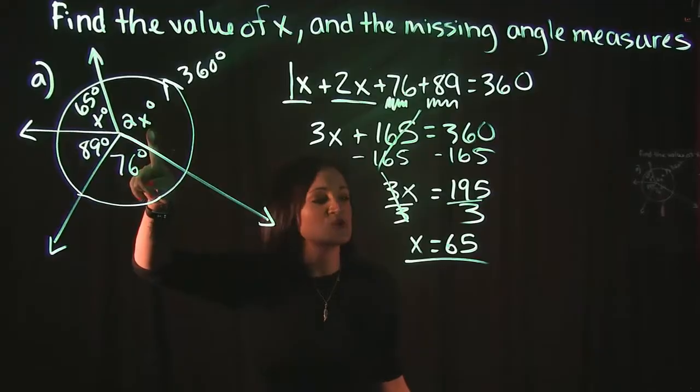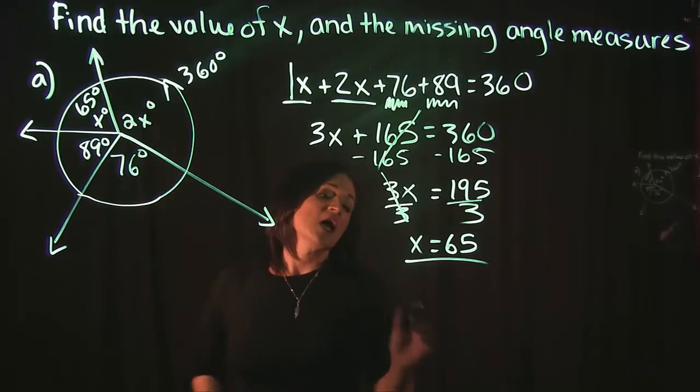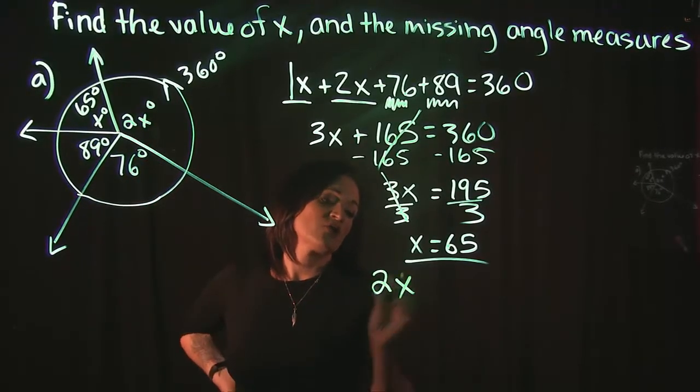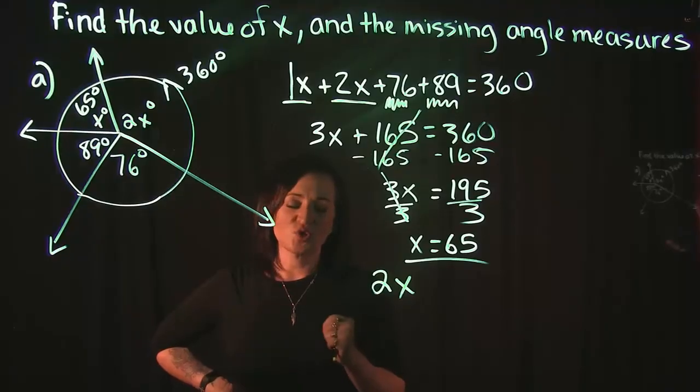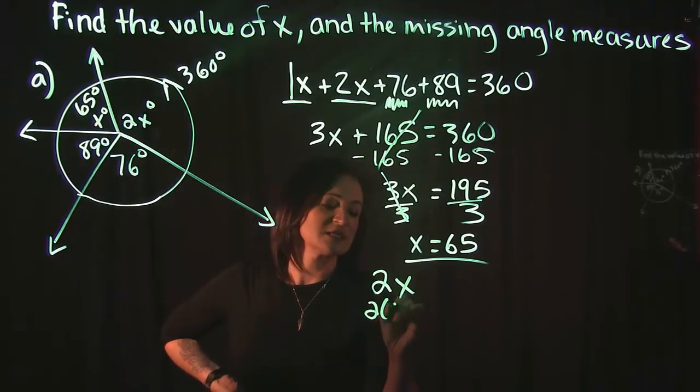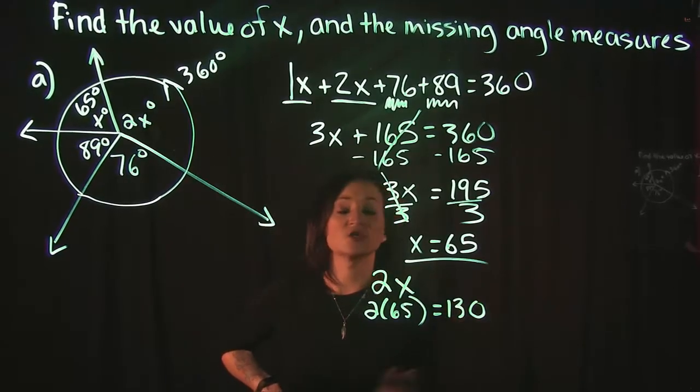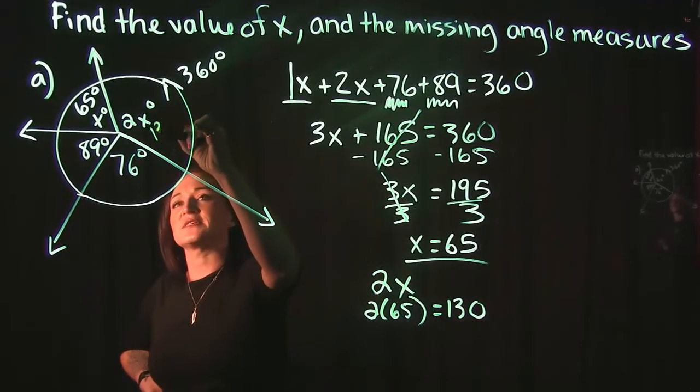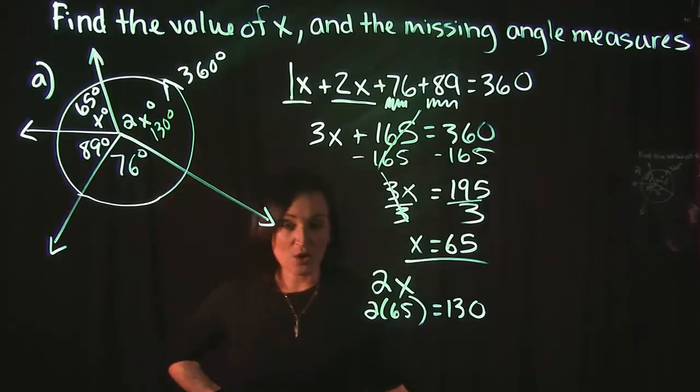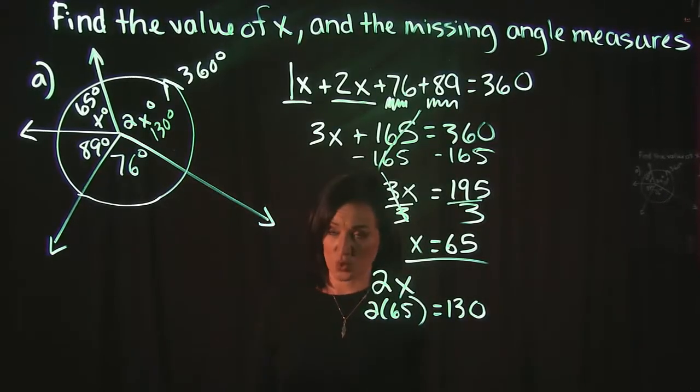The only other one left to find is the one that is equal to 2x. So we know that that angle equals 2x, and since x is equal to 65, 2 times 65 is 130. So that means that this angle must equal 130 degrees, and that wraps up this problem.